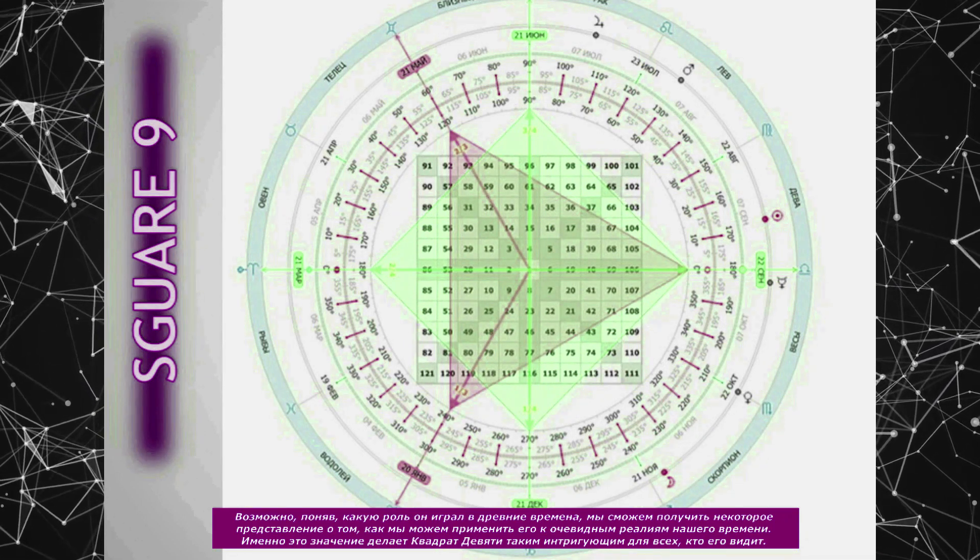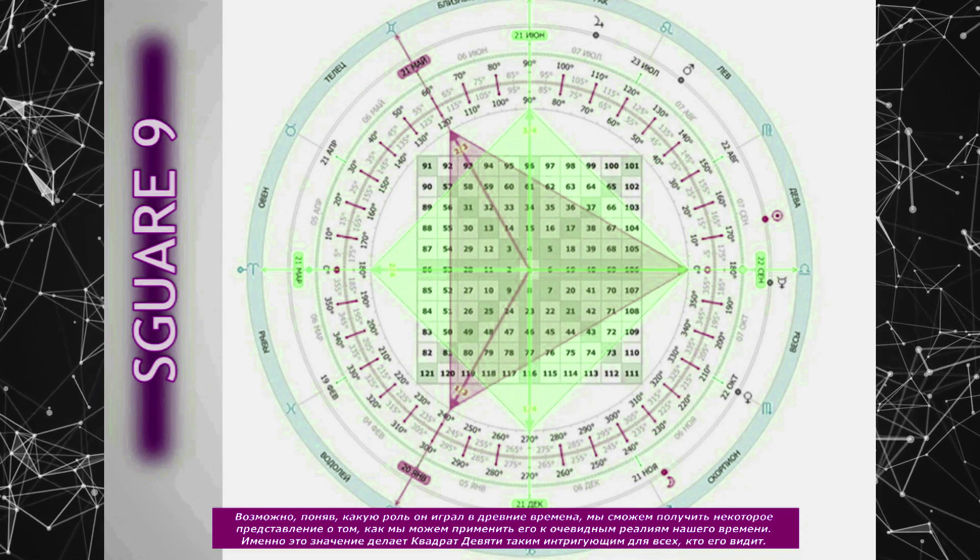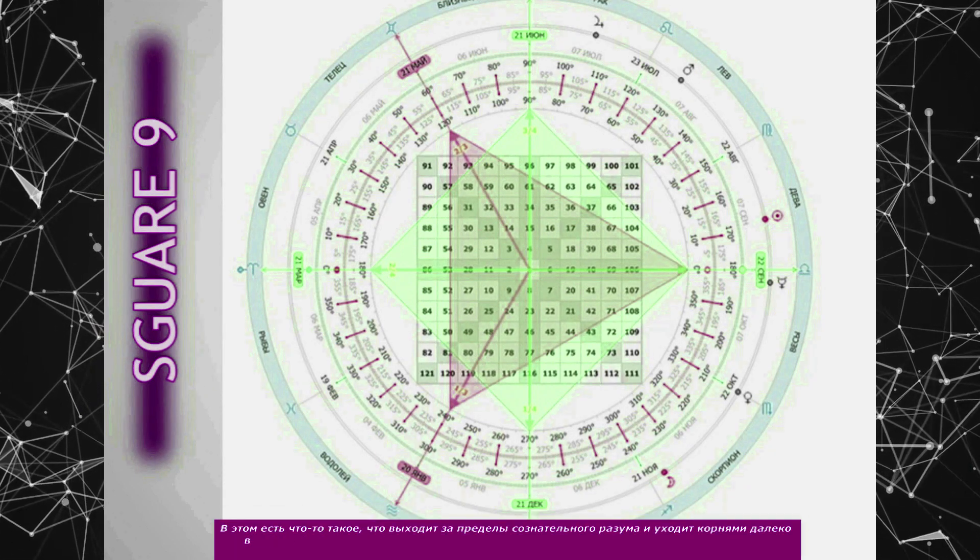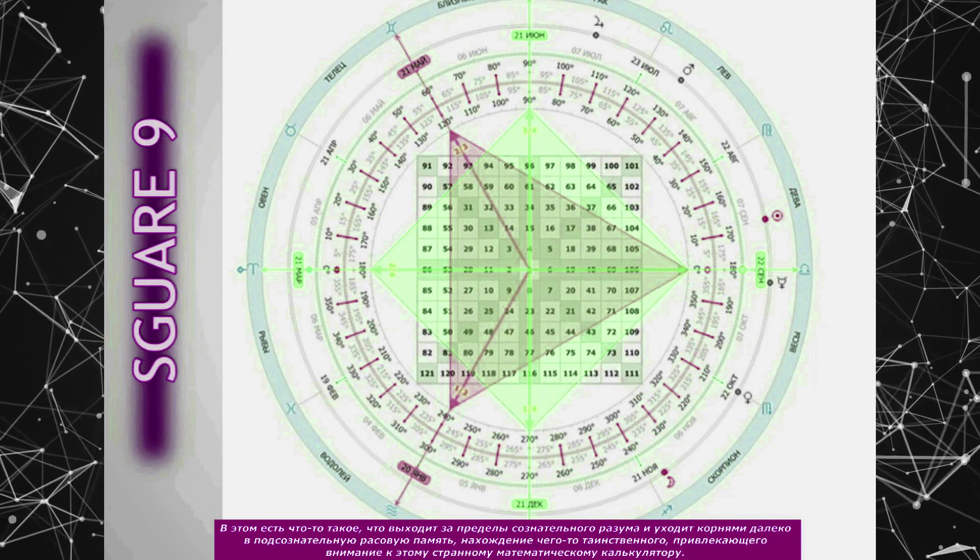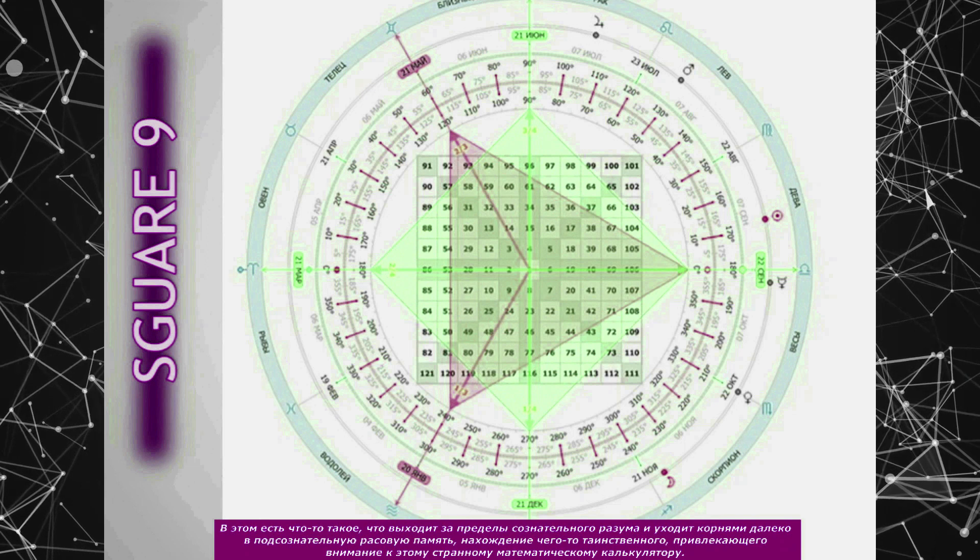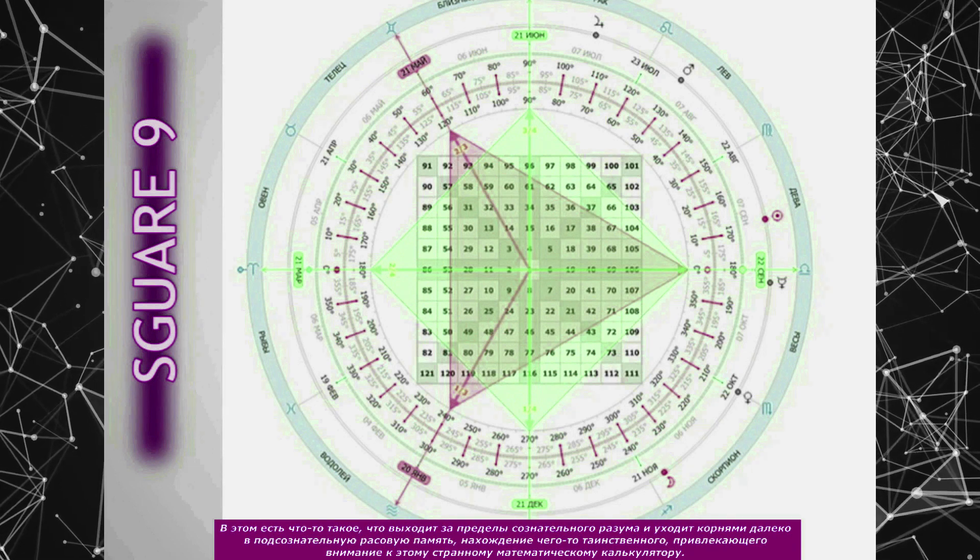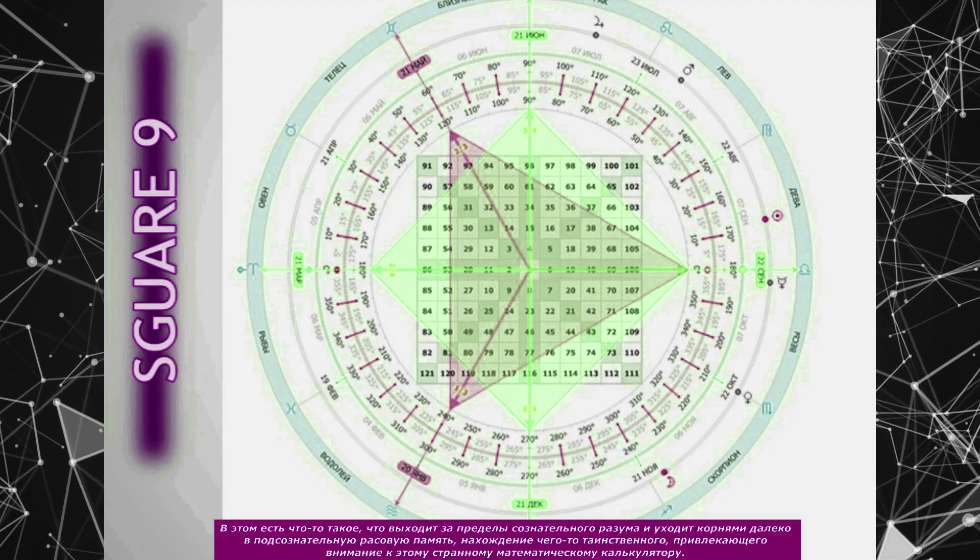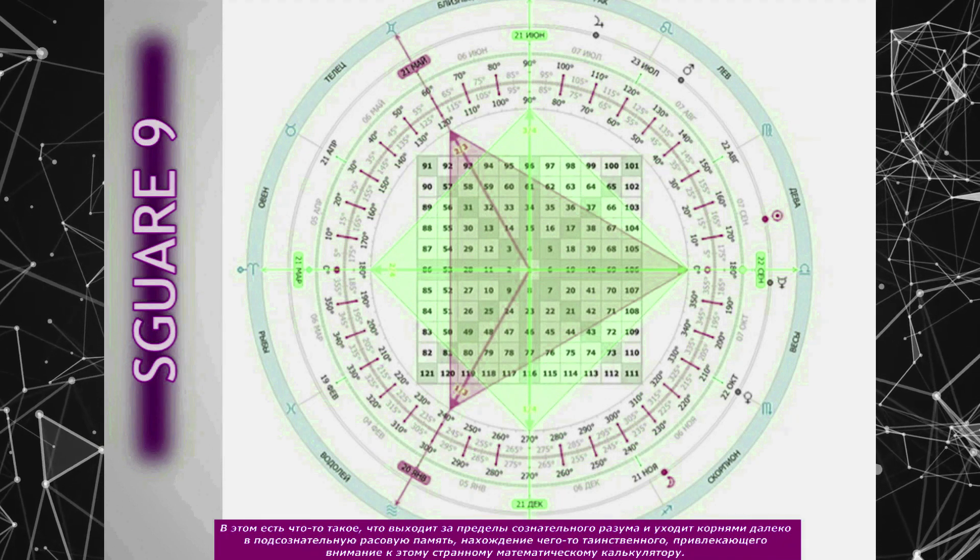It is this value which makes the Square of 9 so intriguing to all who see it. There is something to it which transcends the conscious mind and reaches far back to a subconscious racial memory, finding something mysterious which draws one's attention to this strange mathematical calculator.